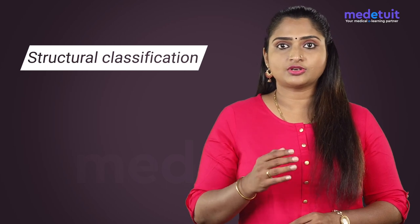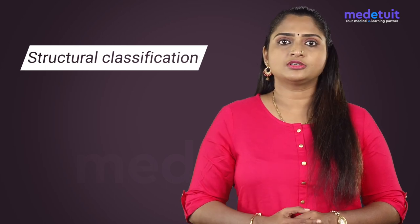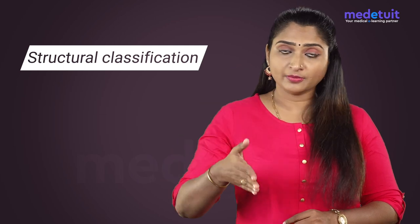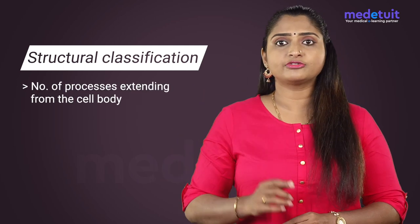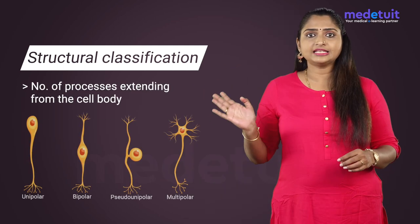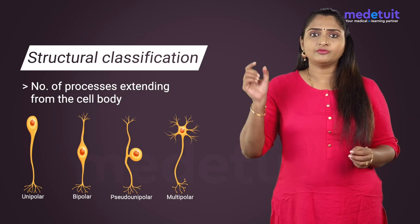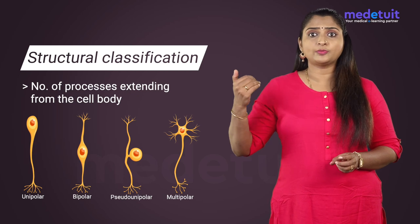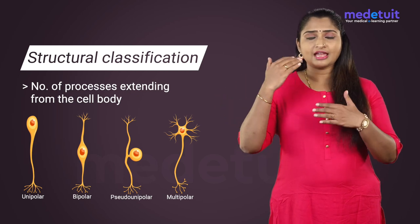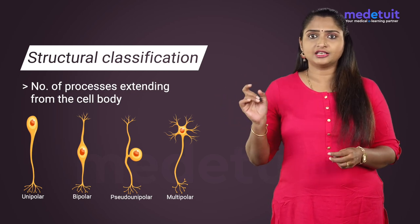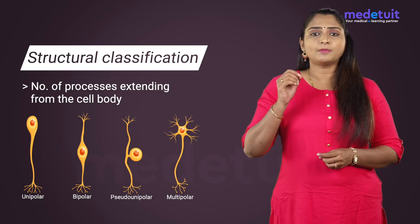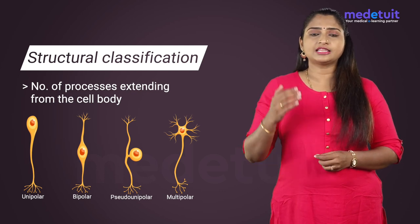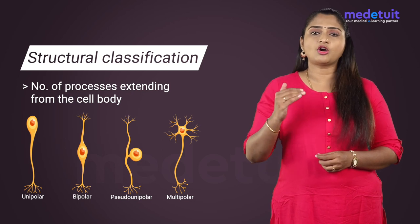Neurons can be classified based on structure and function. According to the structural classification, this is done depending on the number of processes extending from the cell body. As you can see in the image being displayed here, we have the unipolar neuron which has a single process, then we have the pseudo-unipolar neurons which look like two processes but are actually a single process. Bipolar neurons have two actual processes and multipolar neurons have three or more processes.